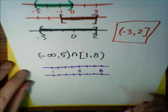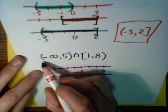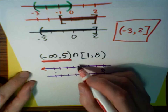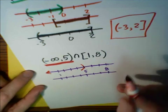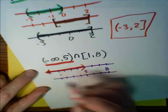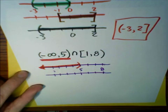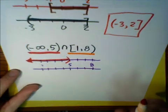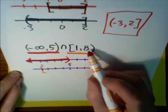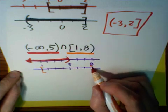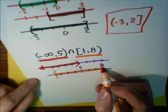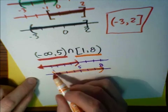Now let's sketch in the intervals. The first interval, in red, starts at negative infinity and ends at 5, not including 5 — a parentheses — shading everything less than 5. The next interval, in orange, starts at 1 with a hard bracket, meaning we include 1, and goes to 8 but does not include 8, so there's a soft parentheses. We shade everything between 1 and 8, including 1.